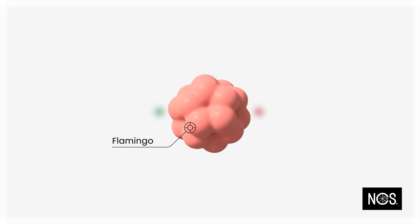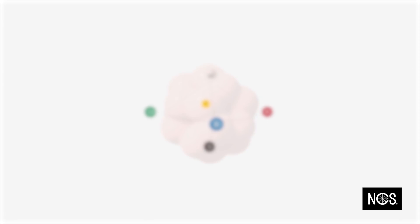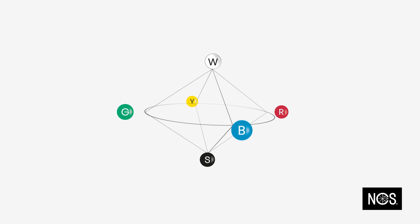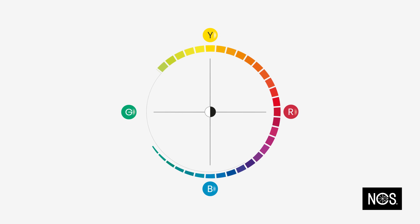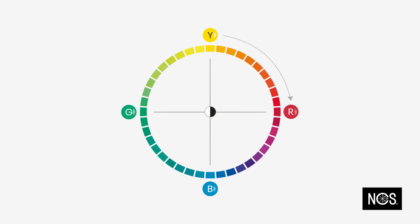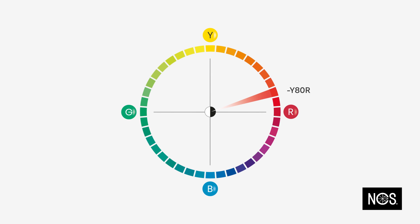Let's demonstrate by using the example of flamingo. What is flamingo? Viewing the NCS color space from above, you will find the NCS color circle. This is where you define the hue of the color. The reference points are the four chromatic elementary colors: yellow, red, blue, and green. We always read the hues clockwise from yellow to red. Our reference flamingo is Y80R — a yellow with 80% red. This is the hue of the color.